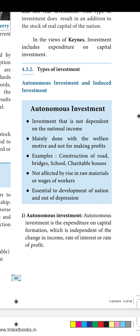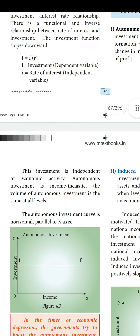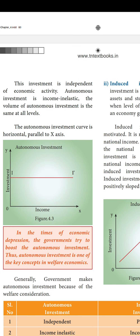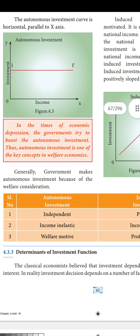Autonomous investment is income inelastic. The volume of autonomous investment is the same at all levels. As shown in the graph — investment on the y-axis, income on the x-axis — autonomous investment is a straight horizontal line, meaning there is no change. It is stable always. Even in times of economic depression, the government tries to boost autonomous investment, which is a key concept in welfare economics. The government makes autonomous investment for welfare considerations alone.